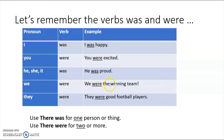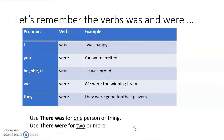We were — we were the winning team. They were — they were good football players. 'Were' is for a group, two people or more. Use 'there was' for one person or thing: there was a cat, there was one boy, there was a pencil. Use 'there were' for two or more things: there were two cats, there were five teachers, there were seven desks.